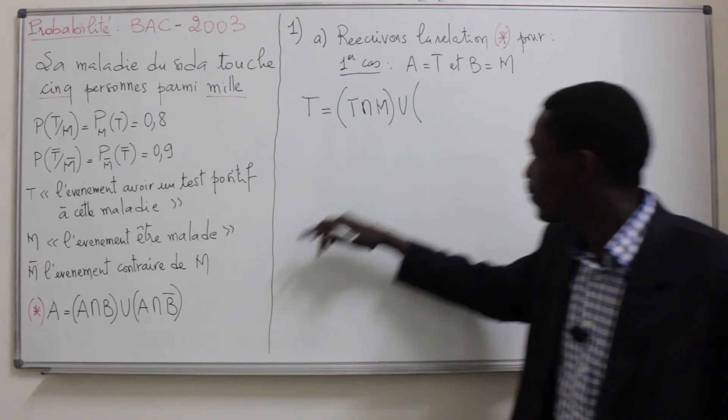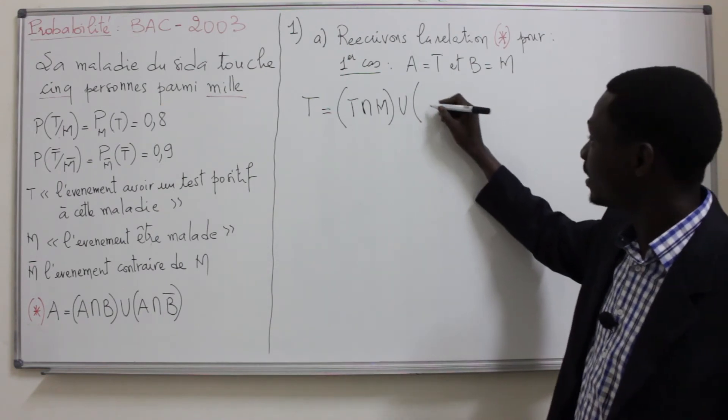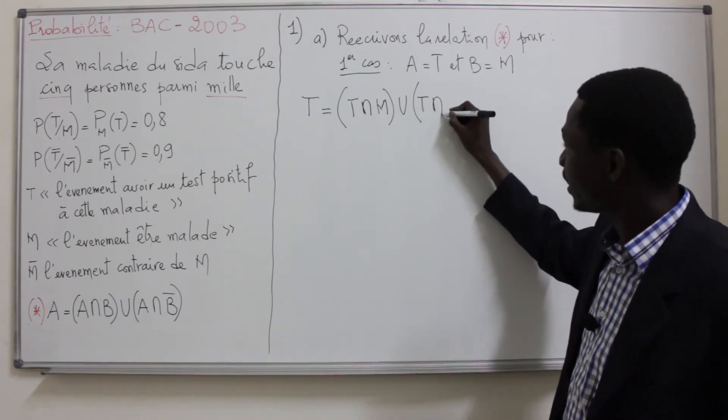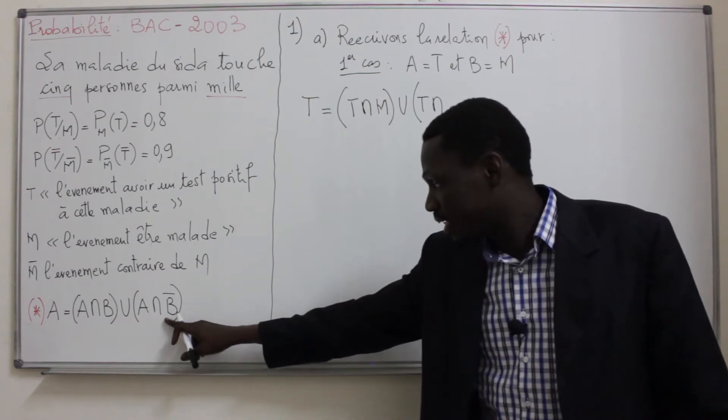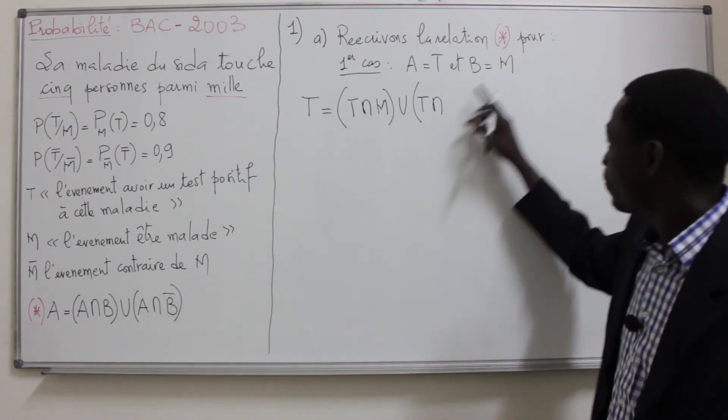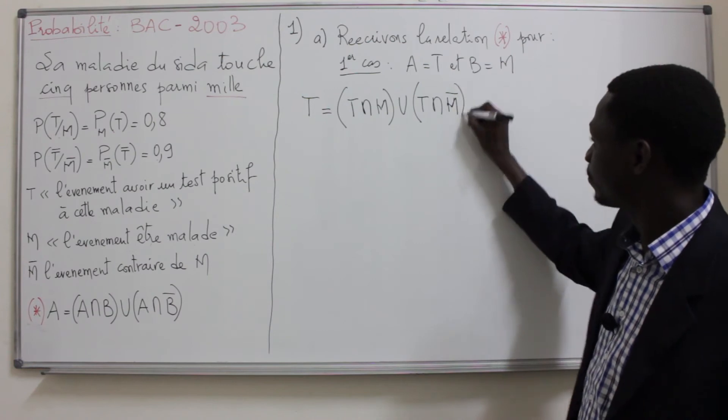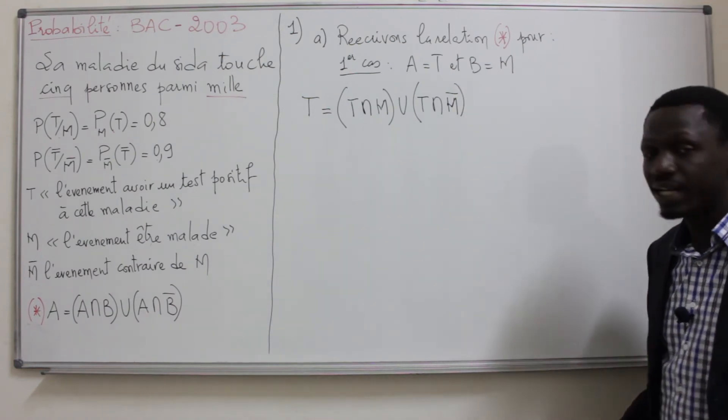union. Le A, on le remplace toujours par T, ça donne T inter B̄, or B = M, ce qui va donner M̄.